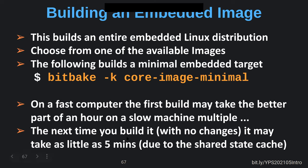The next time you build — say you decide to add DropBear to your image — because of the shared state cache, BitBake will say: I already built the toolchain, all the libraries, and everything from core-image-minimal. I only need to build this one recipe and its new dependencies. It can take as little as five minutes, two or three of which are just parsing to figure out what needs to be done.